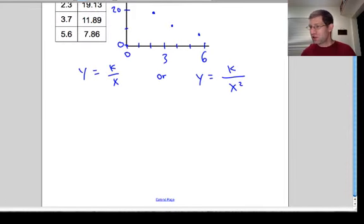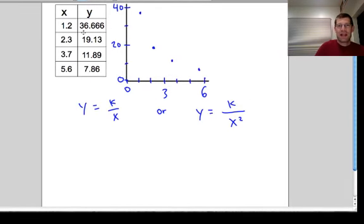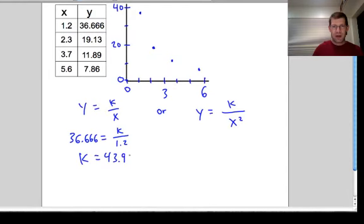I figured I'd give you one of the tough ones in the notes. If you can do this one, you can do the others. From there, let's try the hyperbola one first. Let's go through and take a point. I'd either use this point to find k or the bottom point to find k, and then use the other one to check it. If I take that top one, y, 36.666 equals k over 1.2. Then from there, I can multiply both sides by 1.2, and I come up with 43.9992.